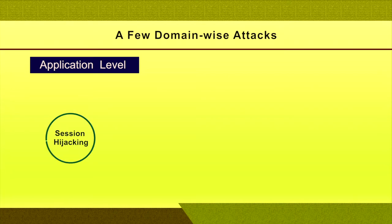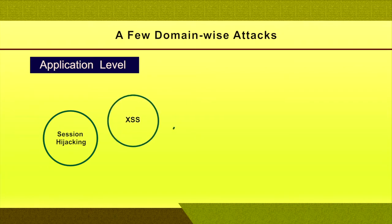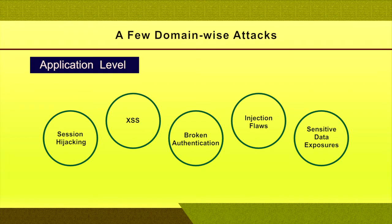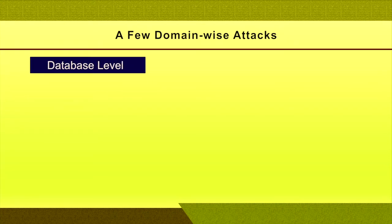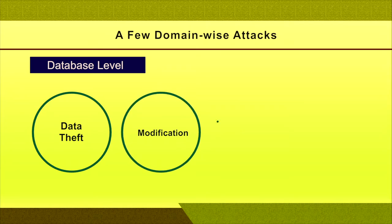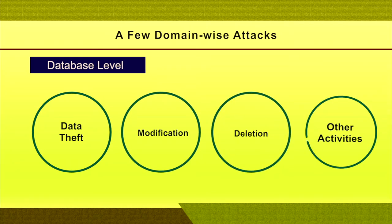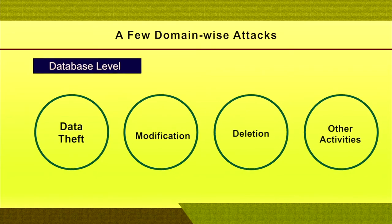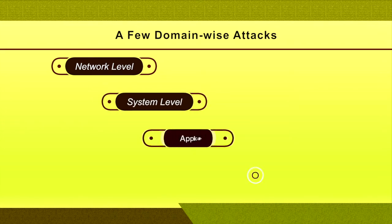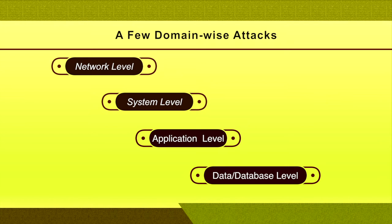Similarly, at the application level, there are many hacking attacks: session hijacking, cross-site scripting, broken authentication, injection flaws, and sensitive data exposure — these are some of the vulnerabilities or attacks done by hackers at the application or web application level. At the data or database level, hackers connect to the database for data theft, data modification, data deletion, or other types of activities. These are the domain-wise attacks at network level, system level, application level, and database level.